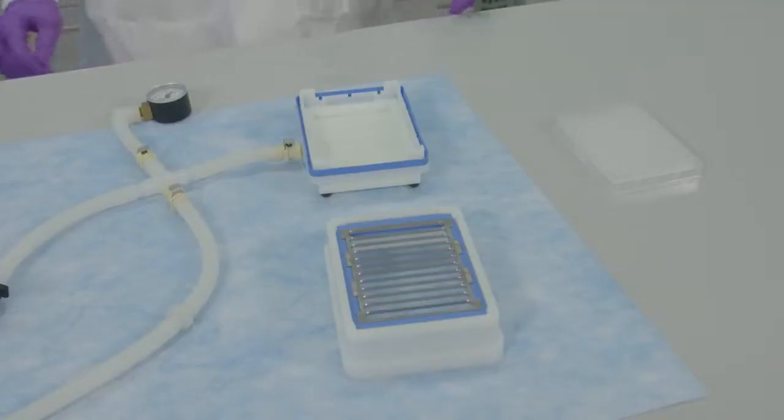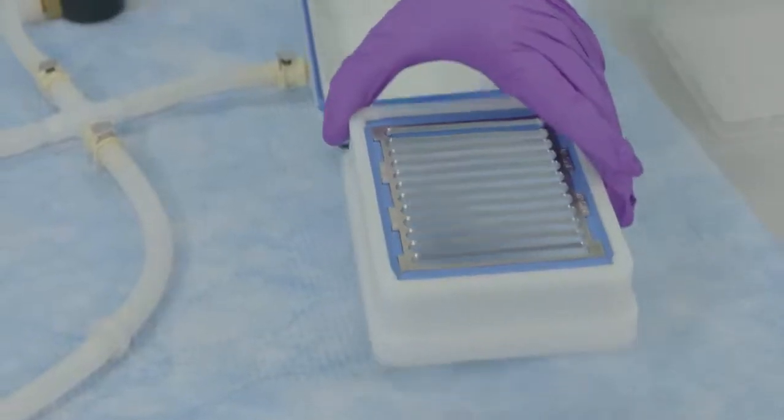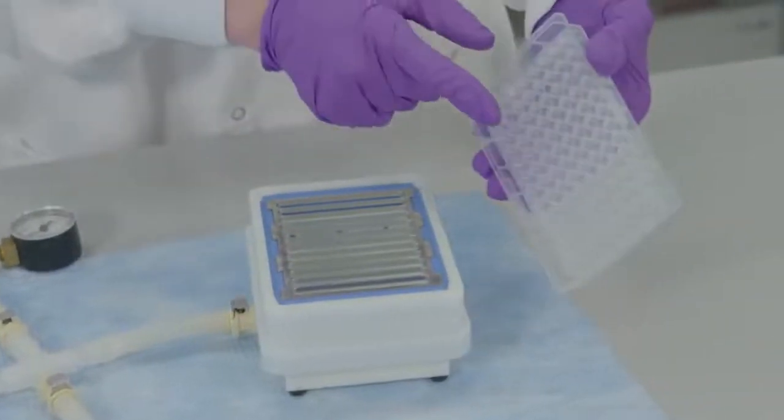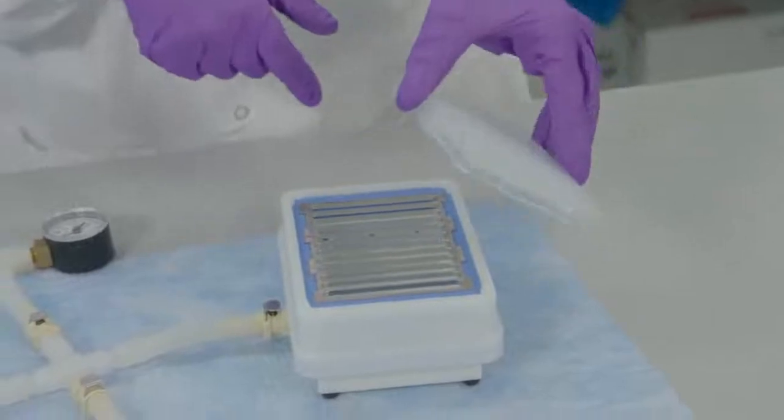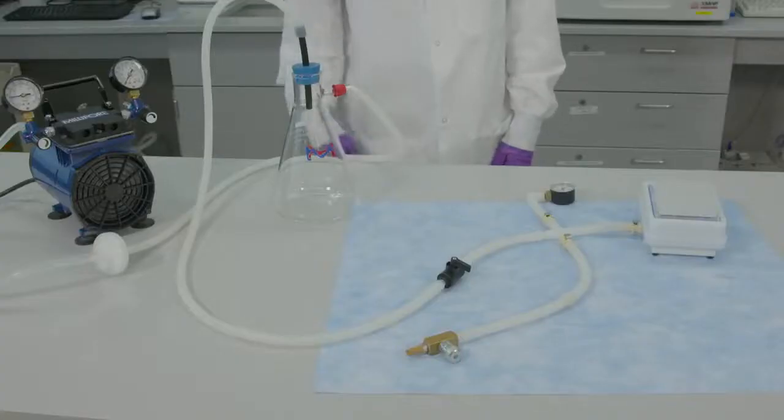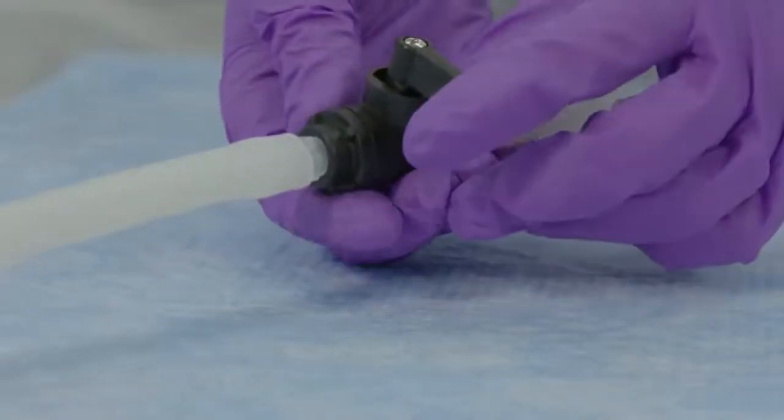Put the manifold collar on the base and then put a standard solid bottom collection plate on the manifold collar. Turn the on off valve to the open position.